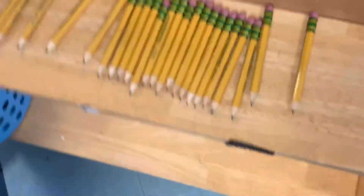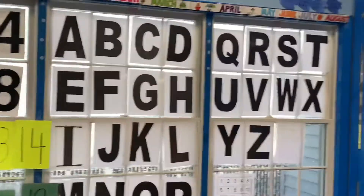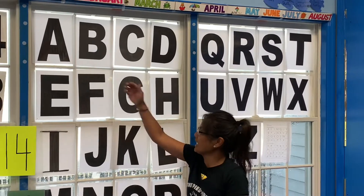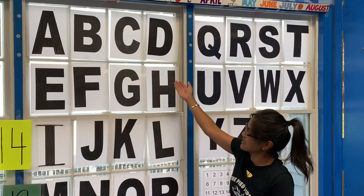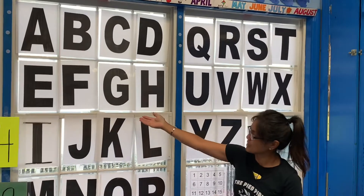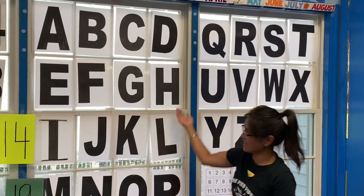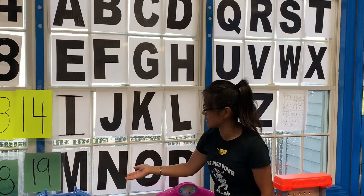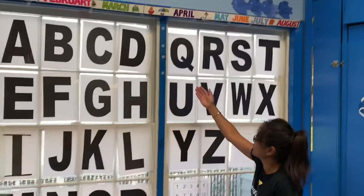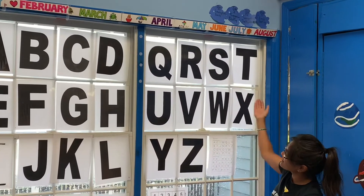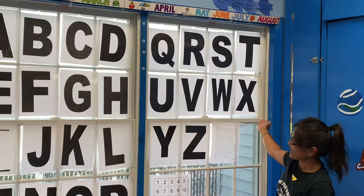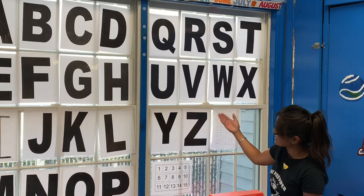Let's go back to the letter wall — the alphabet. I love that alphabet. A, B, C, D, E, F, G, H, I, J, K, L, M, N, O, P, Q, R, S, T, U, V, W, X, Y, and Z. Great job.